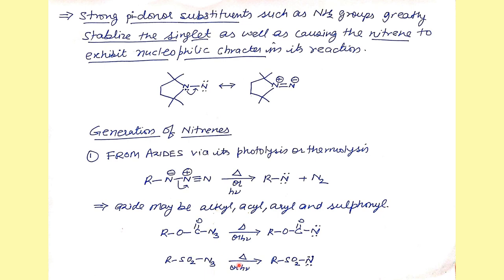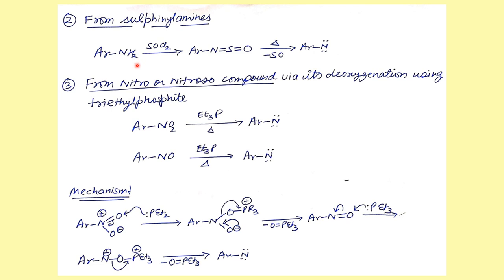Both acyl azides and sulfonyl azides, when heated, generate their respective nitrenes. Apart from that, nitrenes can also be generated from sulfonyl amines. If aromatic amines are treated with thionyl chloride (SOCl2), an intermediate is formed, and when this intermediate is heated, SO2 gas is eliminated and the nitrene is generated in situ.